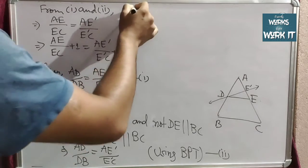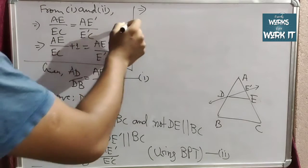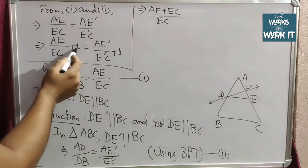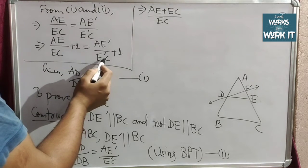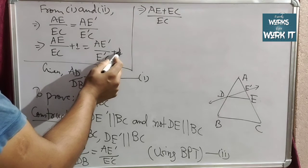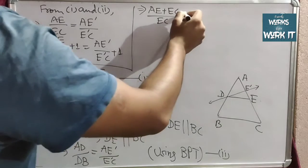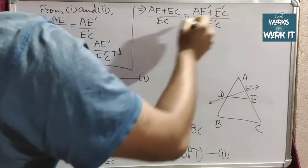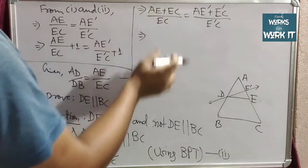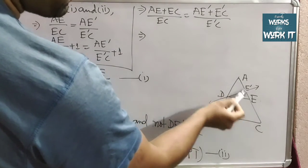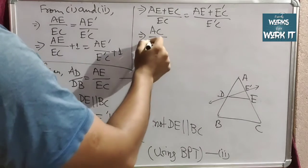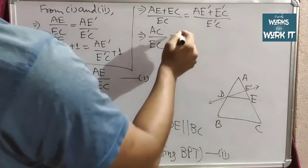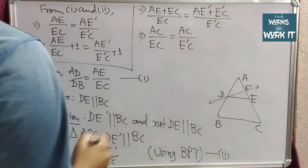Adding 1 to both sides: (AE + EC)/EC on the left, and (AE' + E'C)/E'C on the right. From the diagram, AE + EC gives the full length AC, so we get AC/EC = AC/E'C.